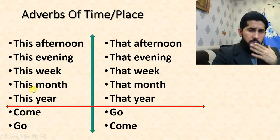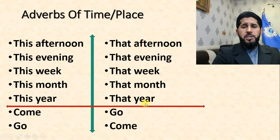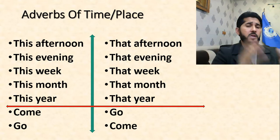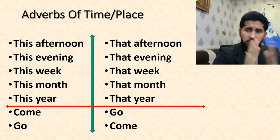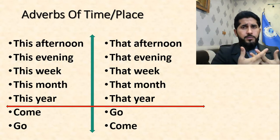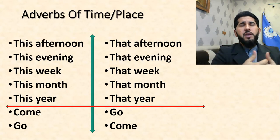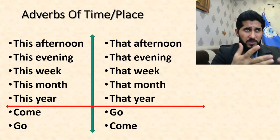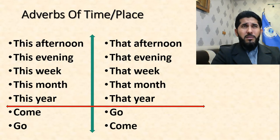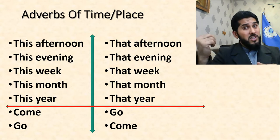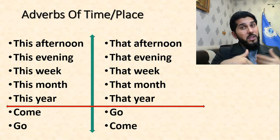'This morning' becomes 'that morning,' 'this afternoon' becomes 'that afternoon,' 'this evening' becomes 'that evening,' 'this week' becomes 'that week,' 'this month' becomes 'that month,' 'this year' becomes 'that year.' Sometimes the verb 'go' can be changed to 'come' and 'come' can be changed to 'go' — it depends on the situation. For example, if you're in India or Pakistan and someone tells you, 'I will go to Afghanistan next month'...